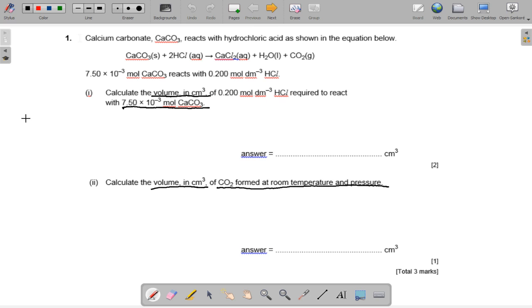So to calculate the volume, we have moles over concentration is the way to get volume. So 7.5 times 10 to the minus 3 all over 0.200, and that is 0.0375 dm cubed. Times that by 1000, we get 37.5 centimeter cubed.